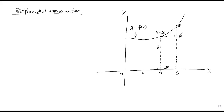PR is perpendicular to QB. This line is the tangent at the point P.